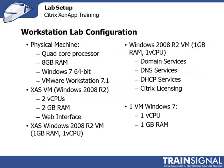Workstation Lab configuration: I understand that not all of you will have access to a server. For the majority — about 95 to 98% of this series — I'm going to be on a workstation with a quad-core processor, 8GB of memory, Windows 7 64-bit, and VMware Workstation 7.1 as a Type 2 client hypervisor to virtualize the following virtual machines.